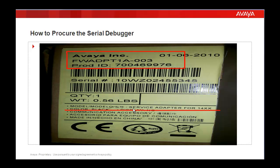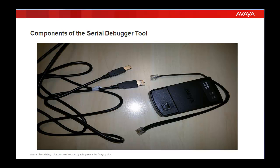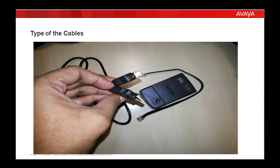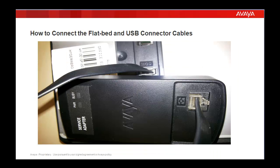But the same tool works for all types of devices. The components of a serial debugger tool: it comprises of a service adapter, a flatbed cable with an analog jack at both ends, and a long cable which has a USB port at one end. The other end has a trapezoidal socket which is used to provide power. As you can see in this picture, one end is connected to the USB port and the other end gets connected to the service adapter's trapezoidal port. When you connect the flatbed cable to the phone's MOD port, as shown in this picture, the other end gets connected to the port on the service adapter which has a phone icon associated with it.